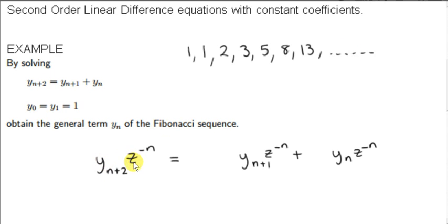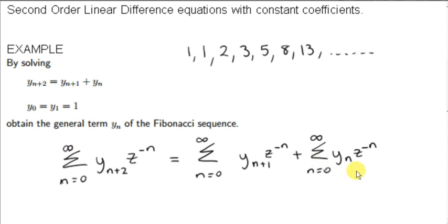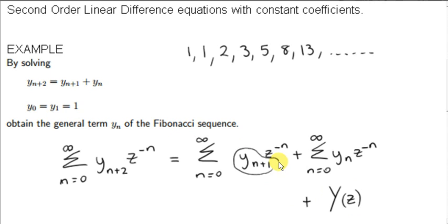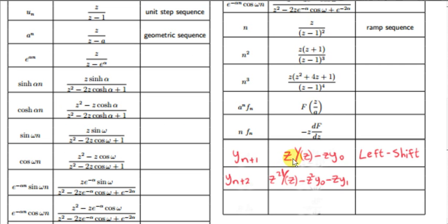Like in the previous video, the first step is to multiply everything by z to the power of minus n, so we can bring in the definition of the z-transform. Next, we sum each term from n equals 0 to n equals infinity. This term here is none other than the definition of the z-transform of the sequence y sub n, which we will call Y of z. Here we have the definition of the z-transform of y sub n plus 1, which we saw in the previous video — it's z·Y(z) minus z·y0.